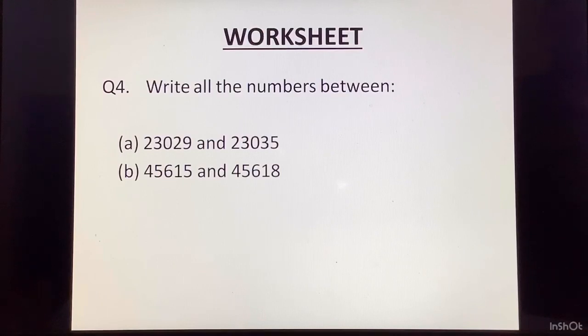Question number 4. Write all the numbers between 23,029 and 23,035. Now, here again, you will keep adding 1 and keep writing it till the time you reach the last number. The second part, 45,615 and 45,618.